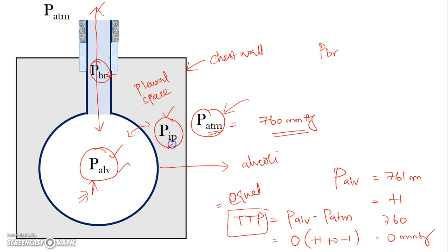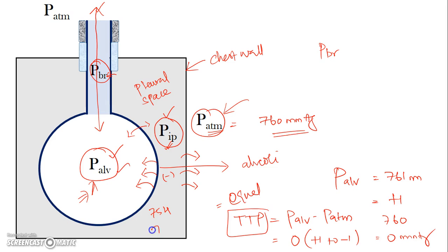The intrapleural pressure is always slightly negative during a normal respiratory cycle. This is because the alveoli are trying to shrink due to elastic forces and surface tension, while the chest wall is trying to expand to its natural size. Since these two opposite forces act in the pleural space, the pleural pressure becomes negative — typically varying from 754 to 756 mmHg, which is referred to as −6 to −4 mmHg during a normal breathing cycle.